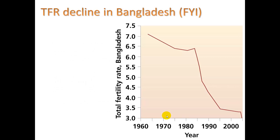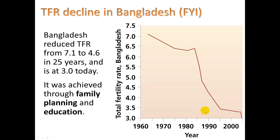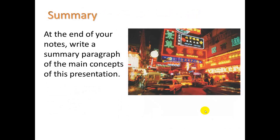Looking at TFR decline in Bangladesh: Bangladesh was able to reduce their TFR from 7.1 to 4.6 in 25 years, a big jump, and it is at 3.0 today — a drastic drop from 1960 to 2010. What's responsible? Two things: family planning and education, which have been shown repeatedly to lower birth rates.